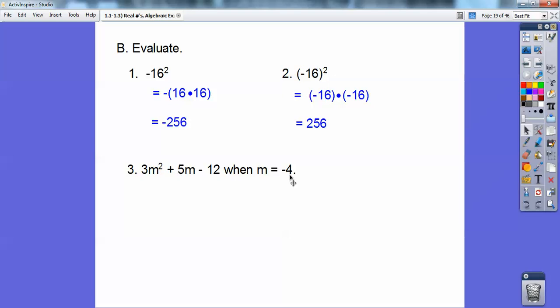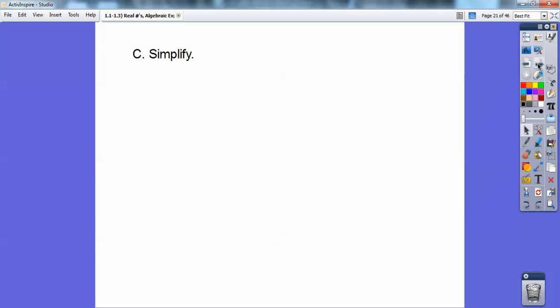On this one, just plug in negative 4 right there and right there. So I get 3 times negative 4 squared, which is positive 16. 5 times negative 4 is negative 20. And then I multiplied 3 times 16 is 48. 48 minus 20 is 28. And then 28 minus that 12 right there is 16. Remember doing that?